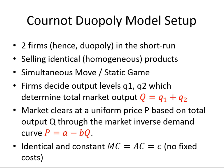The cost structure features identical and constant marginal cost equal to average cost, so this model is identical to what we just looked at — we're just adding one more firm. The firms compete by setting output, not setting prices, which is an important element of the Cournot model. We'll look at another model later where firms compete by setting prices, but this is our first model.